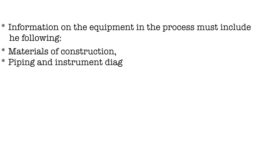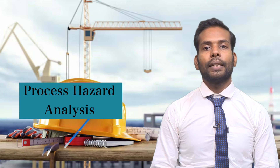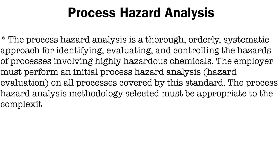Information on the equipment in the process must include: materials of construction, piping and instrument diagrams, electrical classification, relief system design and design basis, ventilation system design, design codes and standards employed, material and energy balances for processes built after a certain date, and safety systems such as interlocks, detection, and suppression systems.